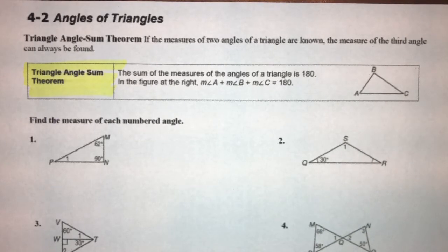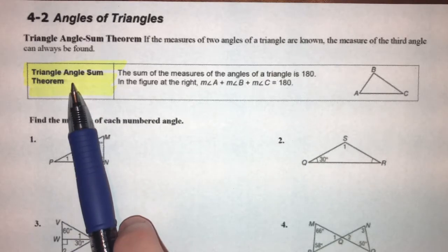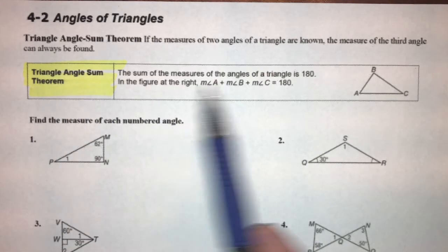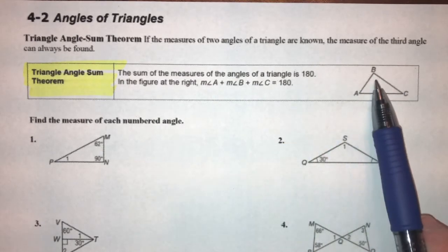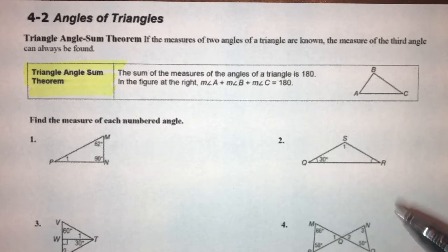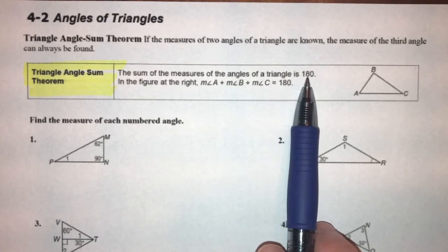This is lesson 4-2. We're going to be talking about the angles of triangles. We've already learned how to classify triangles according to their angles and their side length measure, so now we're going to start doing stuff with that. We're going to learn two new theorems in this lesson. The first one is the triangle angle sum theorem — this is the theorem that tells you that all three angles of a triangle add up to 180 degrees. The sum of the measures of the angles of a triangle is 180.